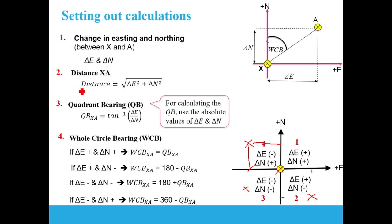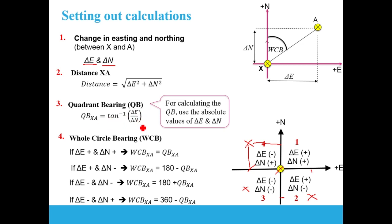The second step is to calculate the distance between X and A using the formula: the square root of delta E squared plus delta N squared. Then we calculate the quadrant bearing using the tangent rule: the inverse tangent of delta E divided by delta N — using absolute values of delta E and delta N at this step.